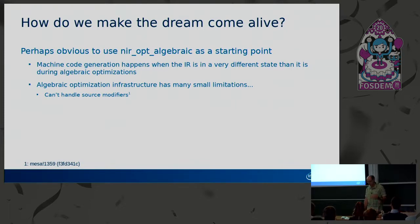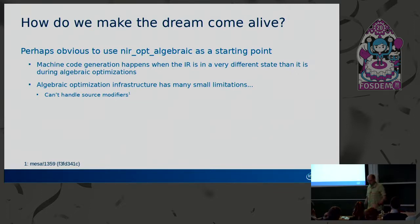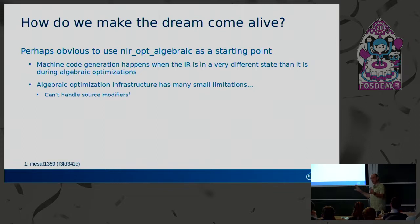For example, OPT algebraic can't handle source modifiers in matching. If it encounters a source modifier while trying to match a pattern against the actual IR, it just gives up. What seems sufficient for code generation purposes is: if you encounter a value and that same value but with some source modifiers, just treat them as completely unrelated variables. It's not a value and its negation — it's a value and a different value — and just match the patterns as though they had nothing to do with each other.